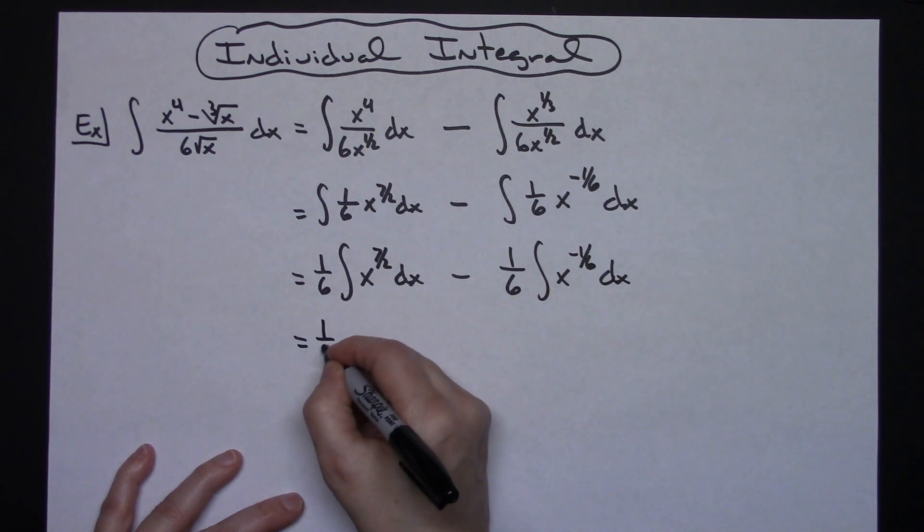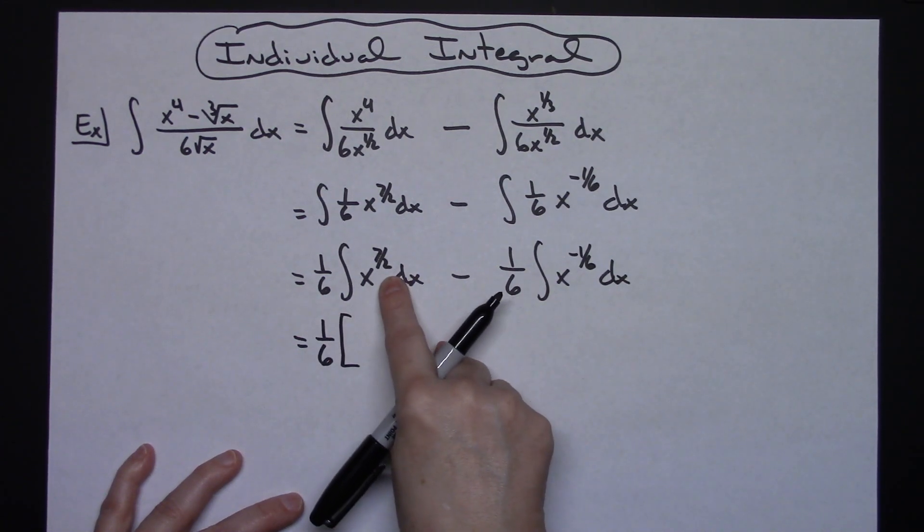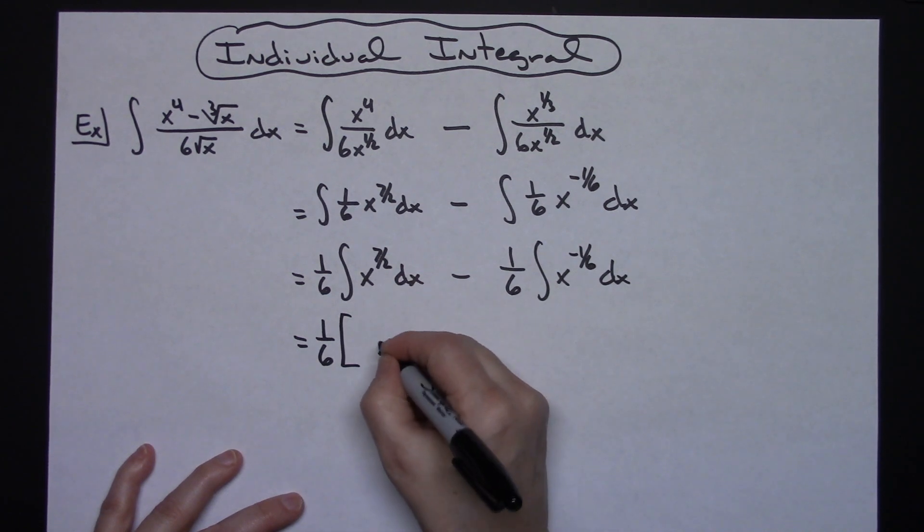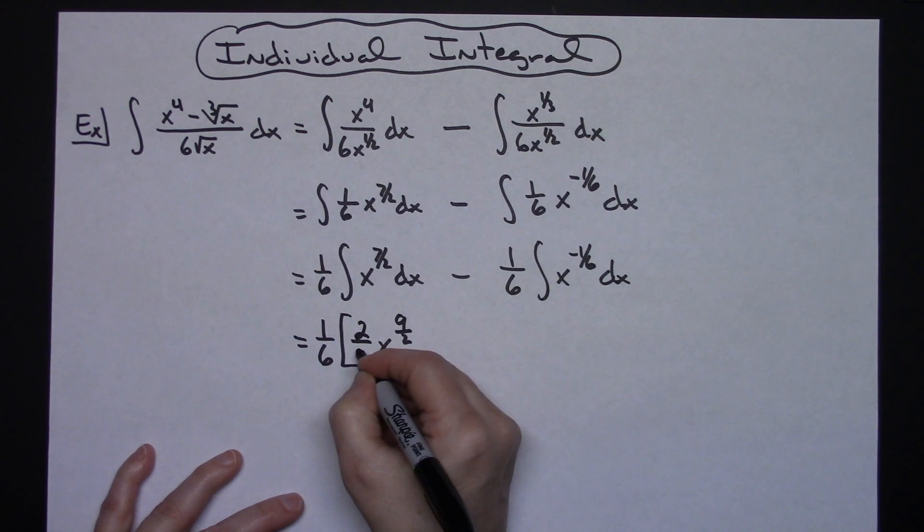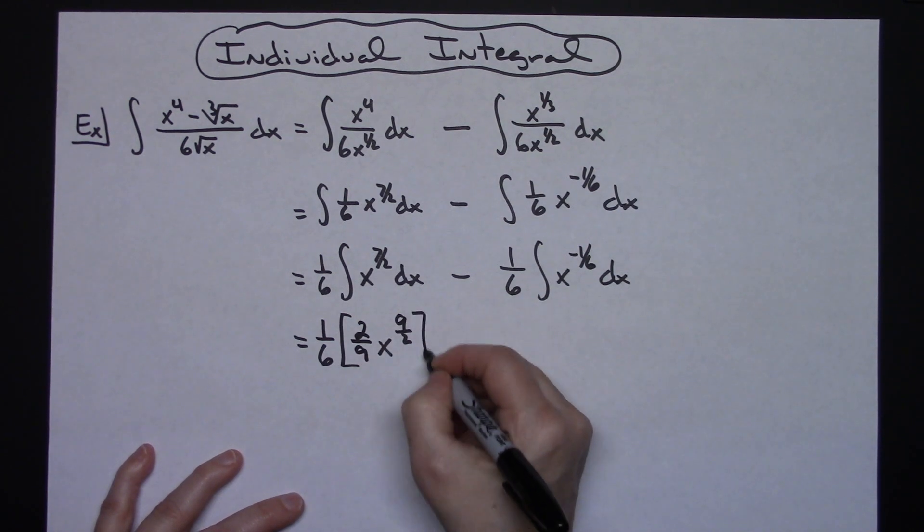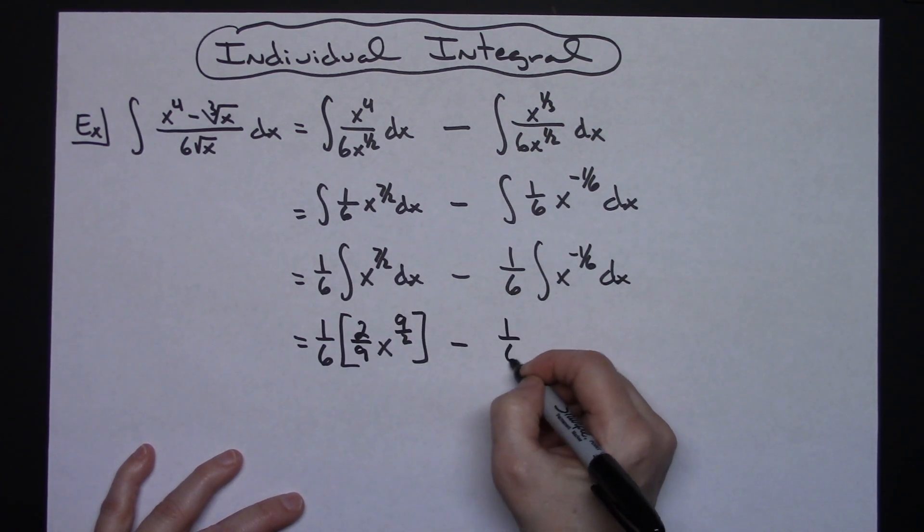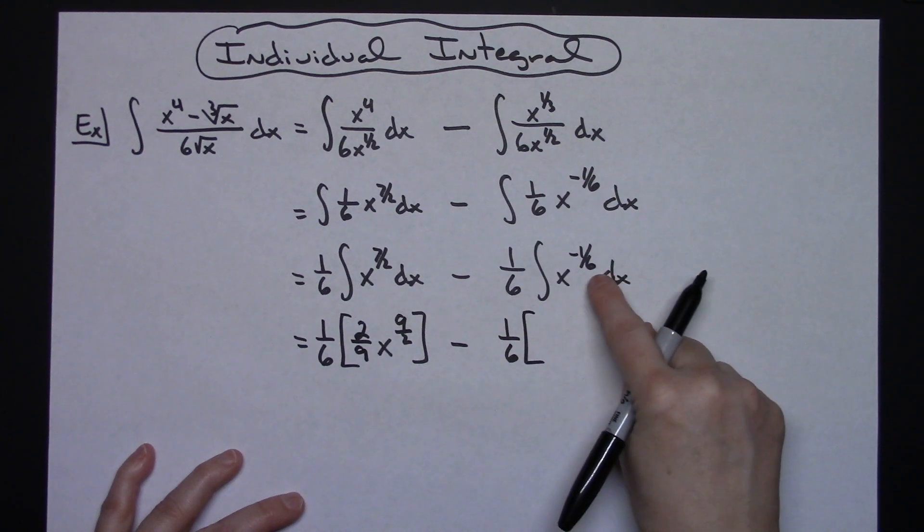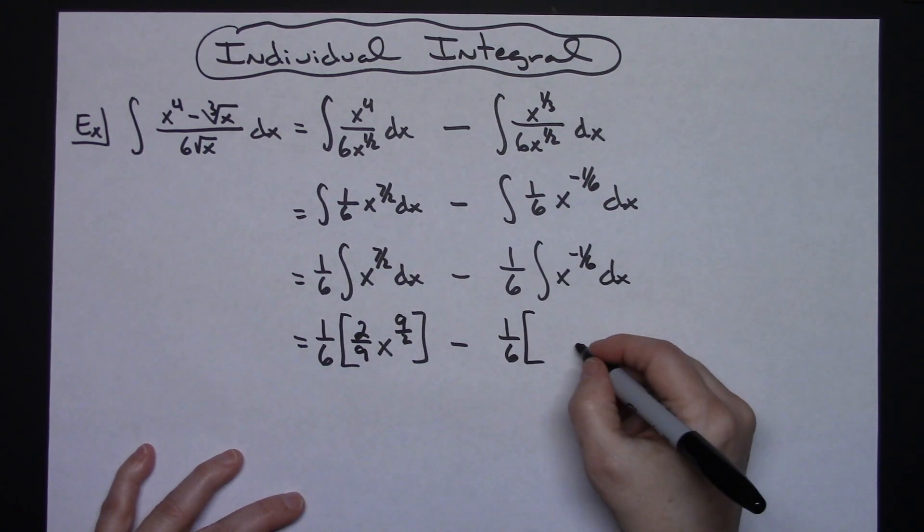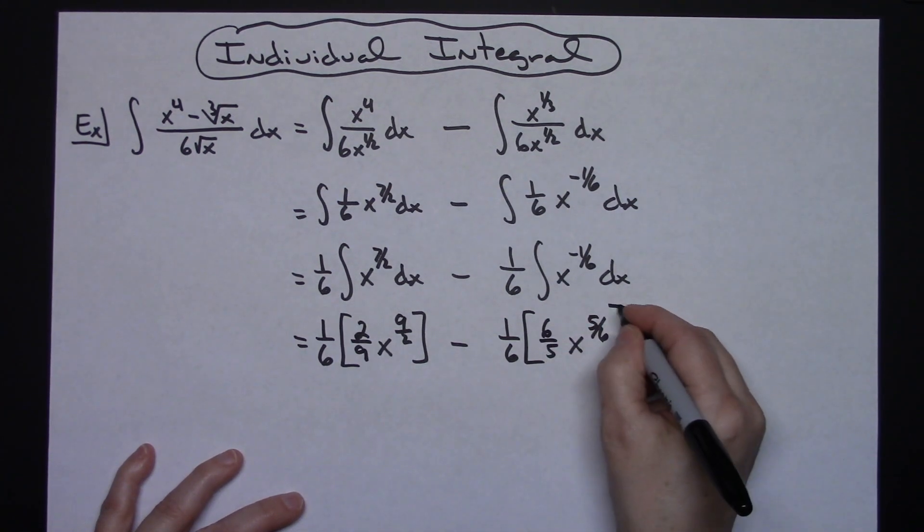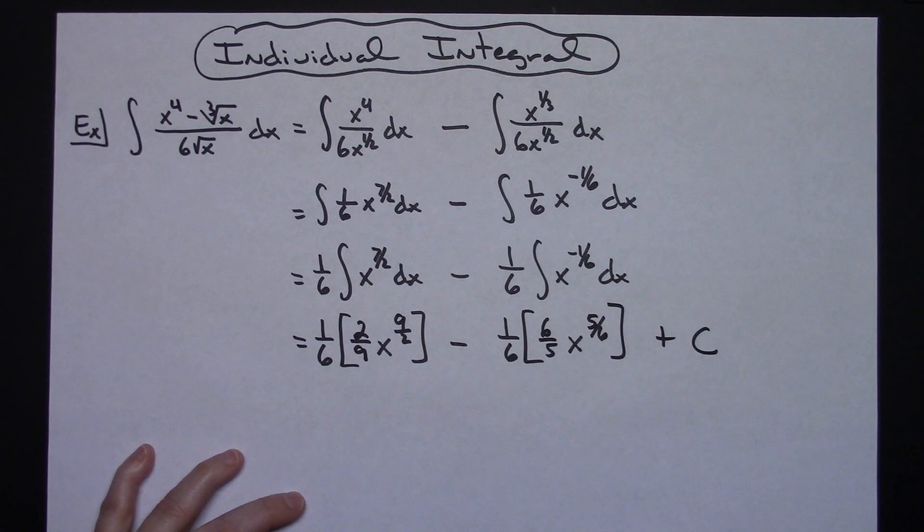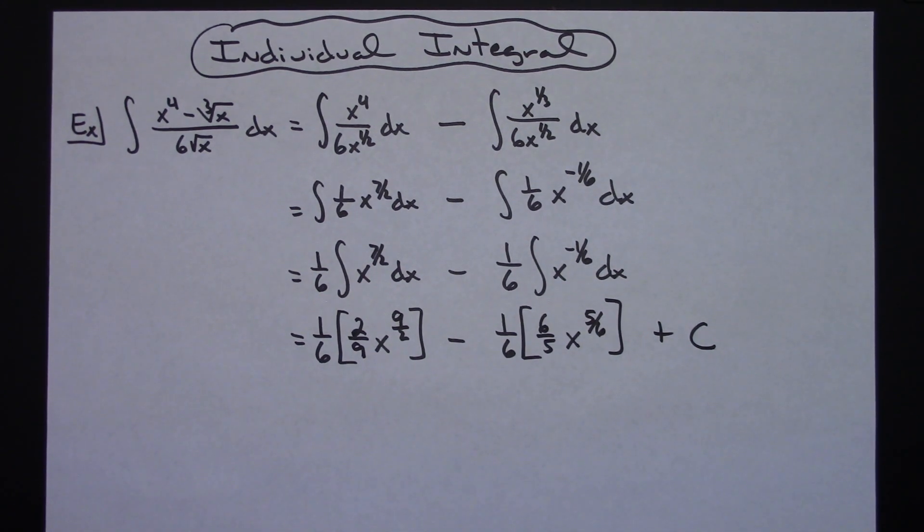I'll have one-sixth—integrating here, adding one to that numerator gives me x to the nine-halves, and the reciprocal in front would be two-ninths. One-sixth on this one, adding one here gives me x to the five-sixths, and taking the reciprocal will be six over five in the front. I'll go ahead and add that plus C now because I've done all my integration.